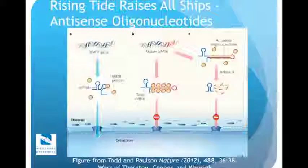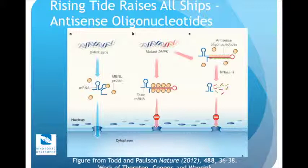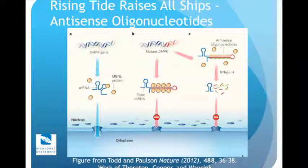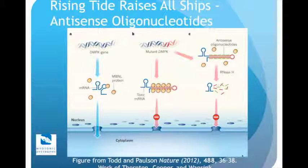One way people are drugging these RNAs is using antisense oligonucleotides. This work — generally in myotonic dystrophy type 1 — is from Charles Thornton, Tom Cooper, and Wancik, who have used antisense oligonucleotides to bind to the toxic RNA. People are using antisense oligonucleotides to advance therapy for DM1, and the lessons learned will advance other areas. There are webinars on the MDF website by Bruce Wentworth and Charles Thornton that go into more detail on the mechanism of these therapeutic approaches and articulate how a rising tide will raise all ships.